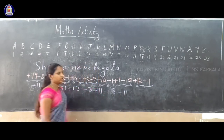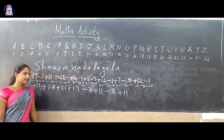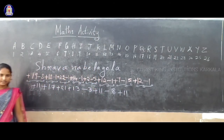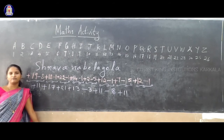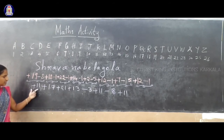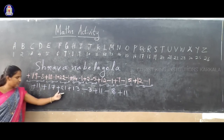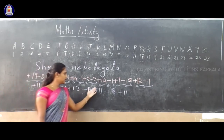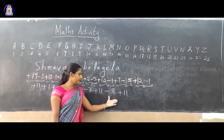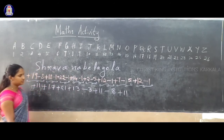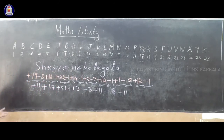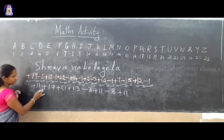Next two integers: plus 7 minus 15. From 15 subtract 7, remaining is 8. Greater number is 15, sign is minus — so minus 8. The last integer: plus 12 minus 1. 12 minus 1 is 11, greater number sign is plus. Now again, simplify the remaining integers.